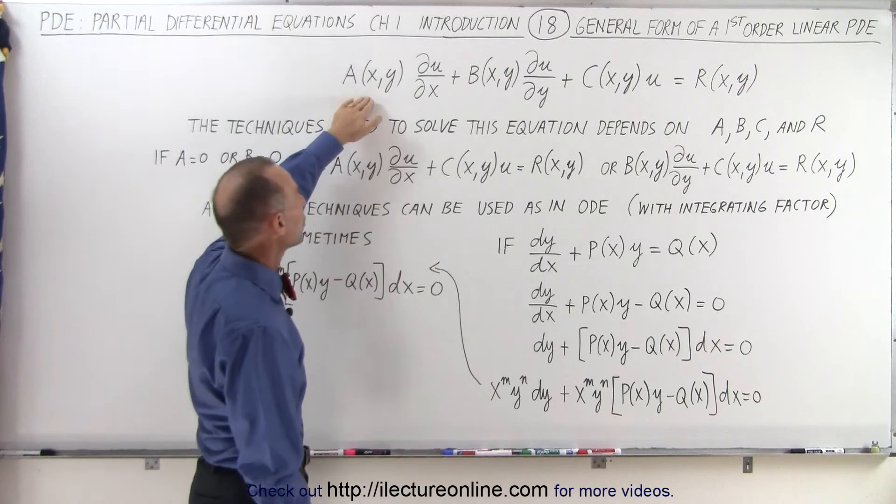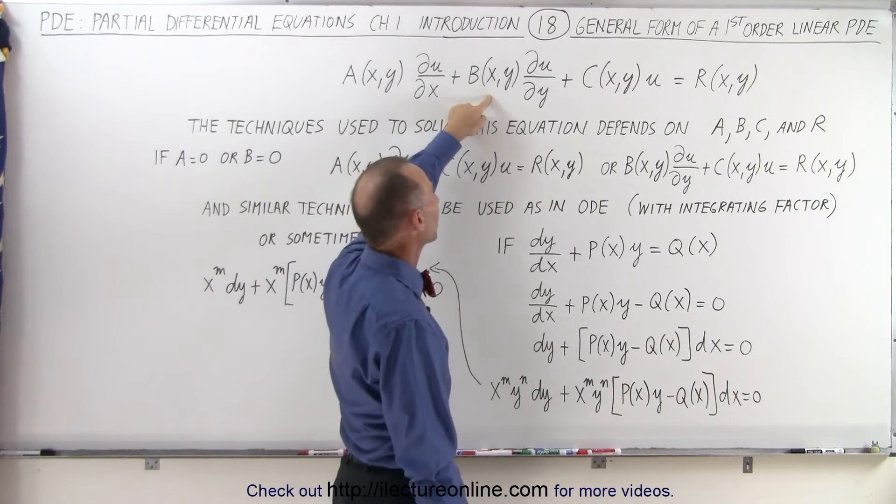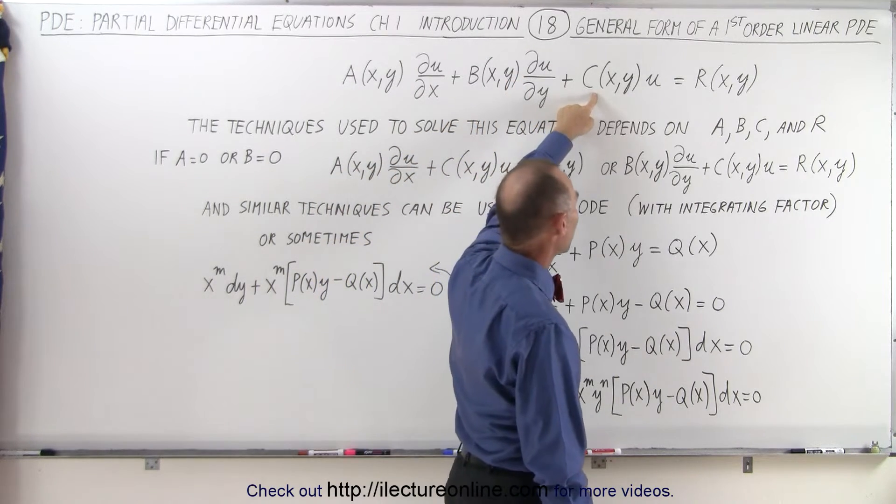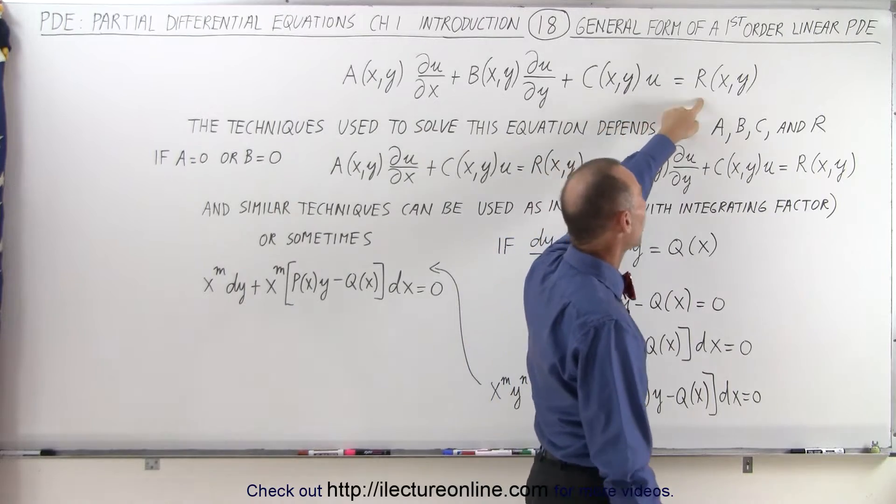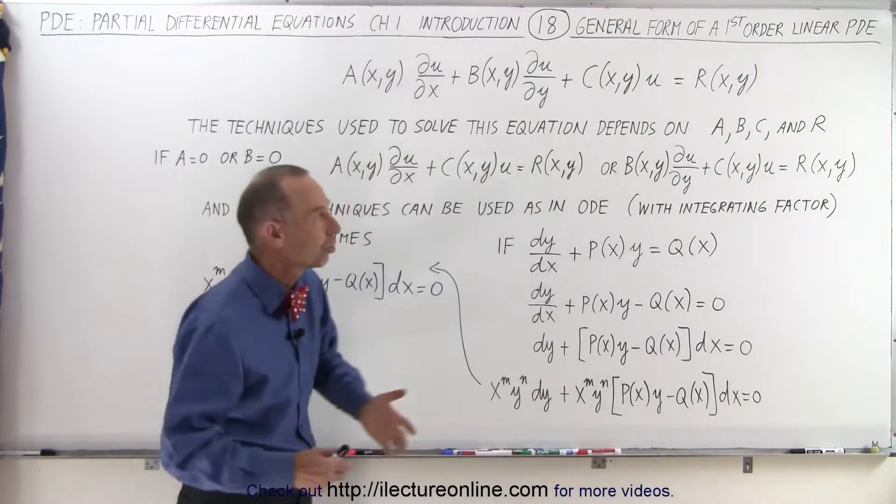It's a function of x and y times the partial of u with respect to x plus a function of x and y times the partial of u with respect to y plus a function of x and y times u equals a function of x and y. That's the general form with all the potential terms.